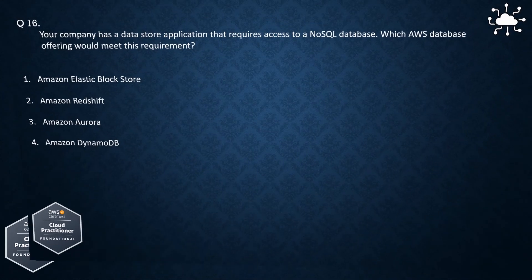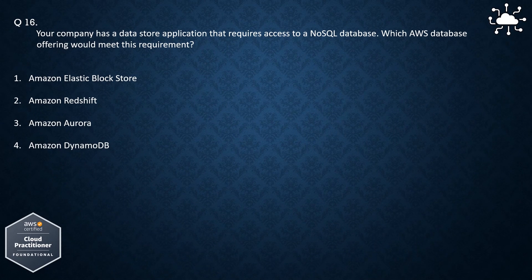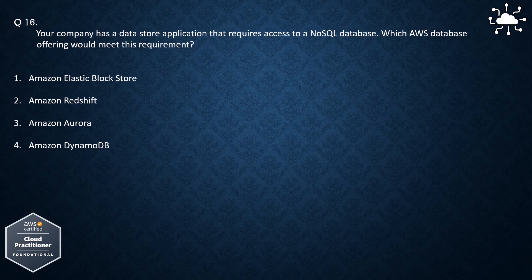Question 16. Your company has a data store application that requires access to a NoSQL database. Which AWS database offering would meet this requirement? 1. Amazon Elastic Block Store, 2. Amazon Redshift, 3. Amazon Aurora, 4. Amazon DynamoDB. The correct answer is Amazon DynamoDB.